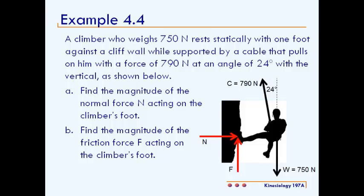In part A it says find the magnitude of the normal force N acting on the climber's foot and in part B it says find the magnitude of the friction force F acting on the climber's foot.